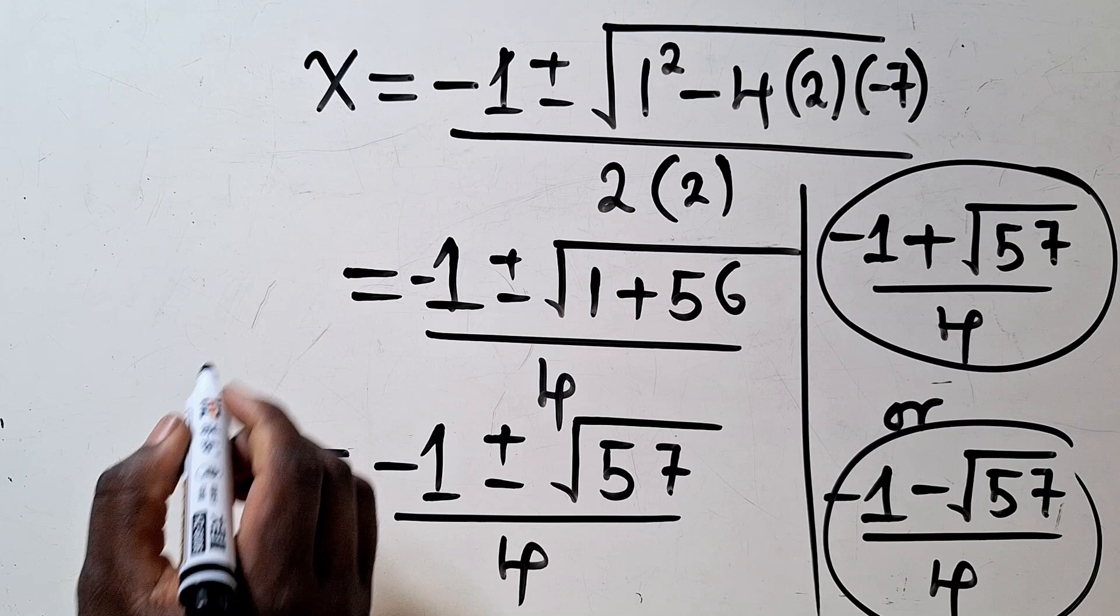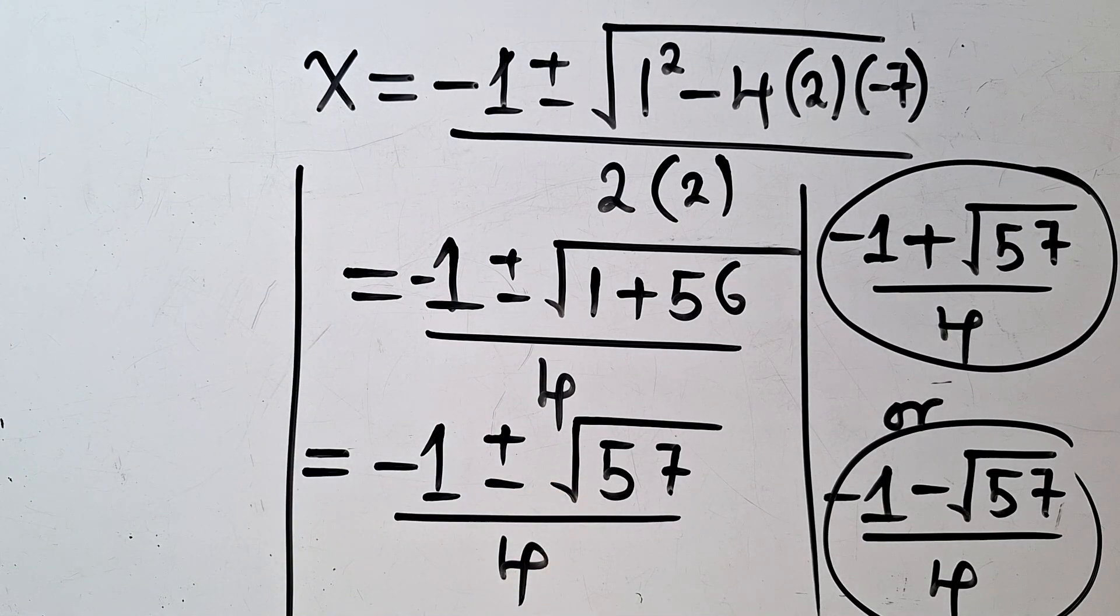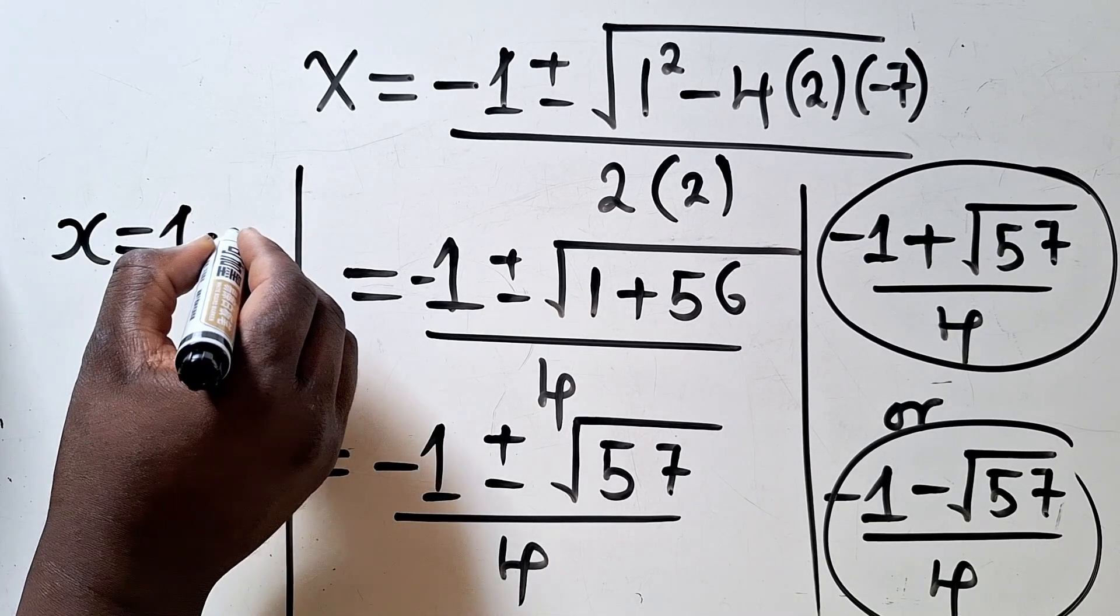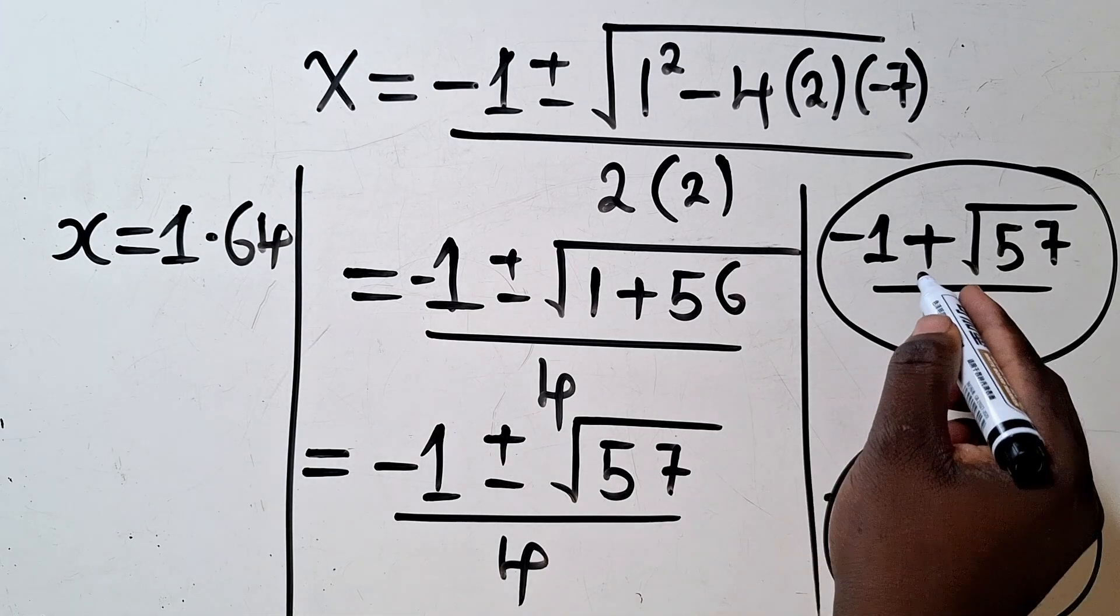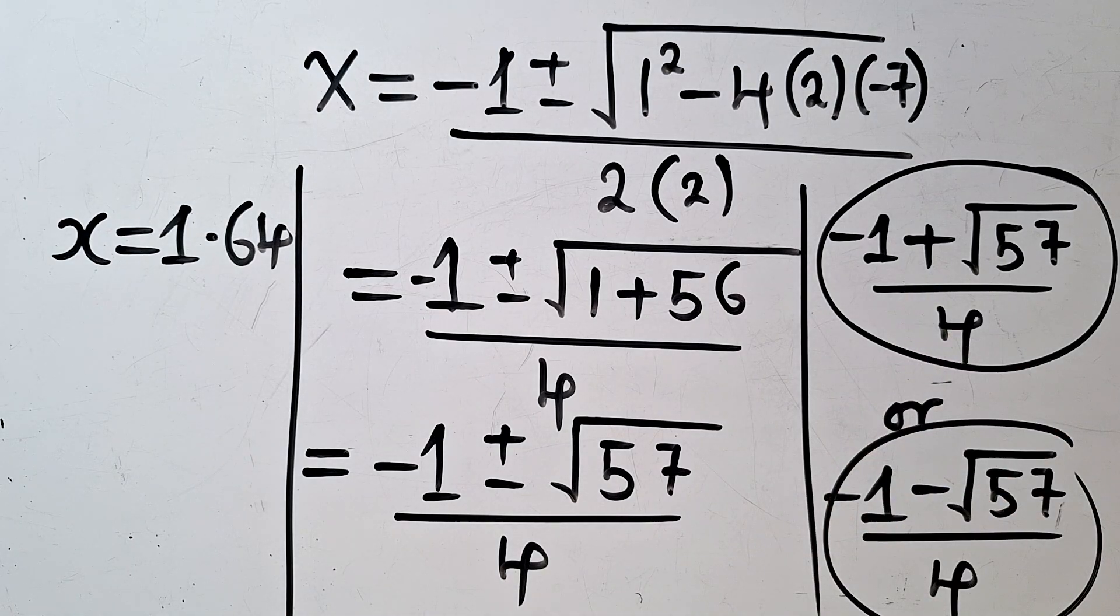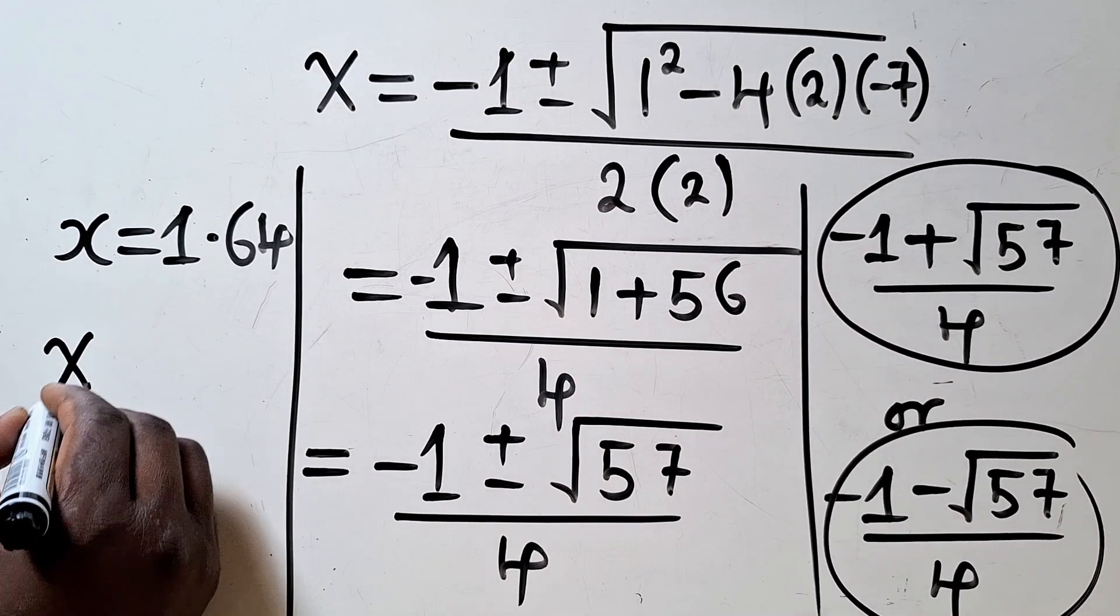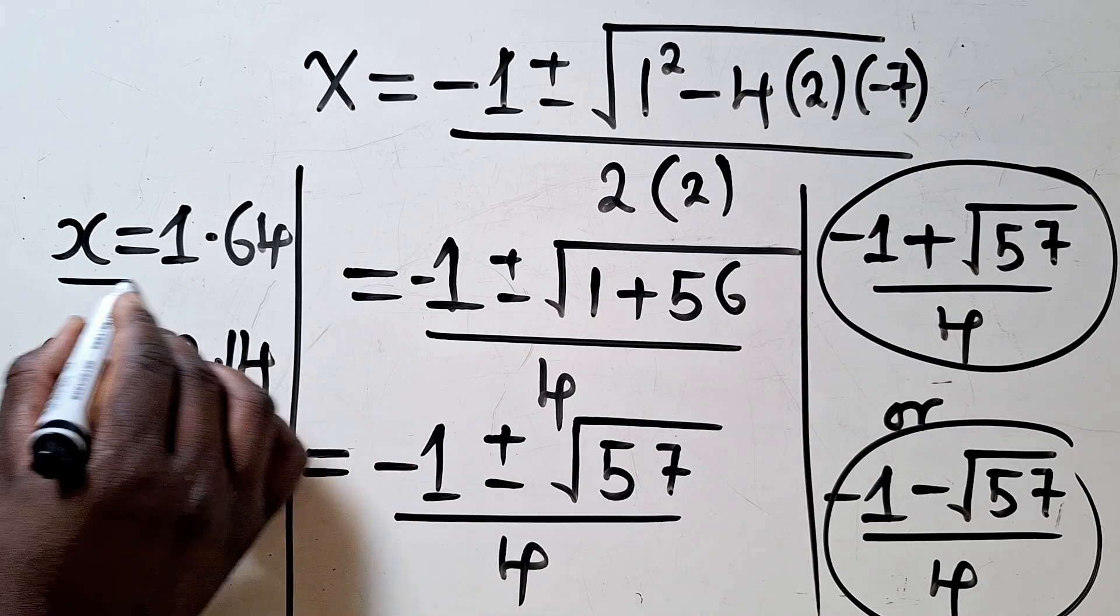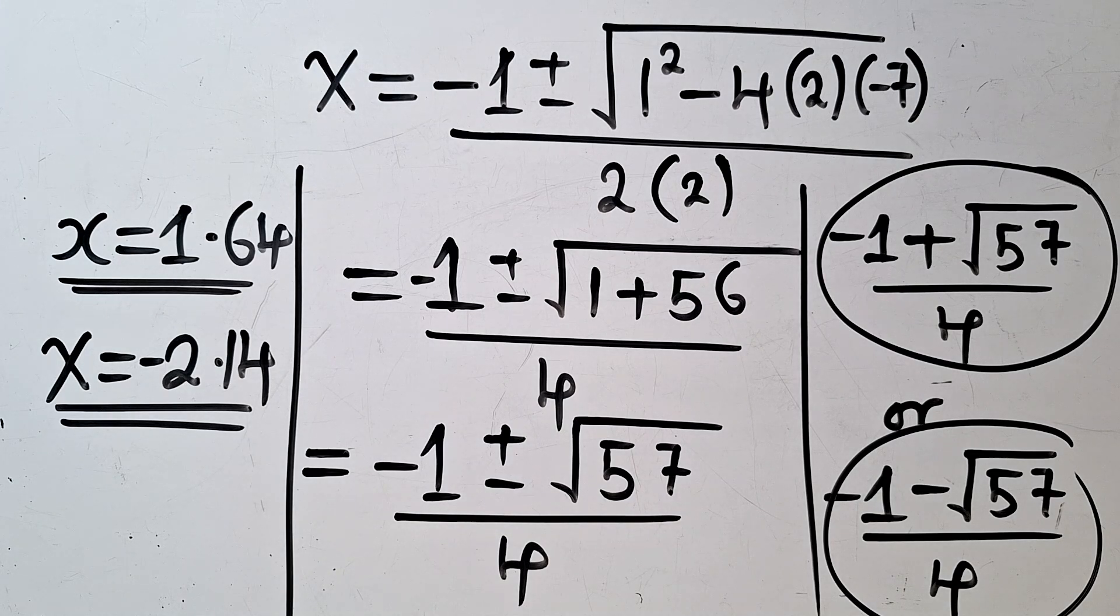For equation 1, when we get our calculator, we've got negative 1 plus square root over 57, then we divide this by 4. So our answer will be x equal to 1.64. That is for this one. For the other one, negative 1 minus square root over 57 divide by 4, this is giving us x to be equal to negative 2.14. These are the two solutions by using quadratic formula.